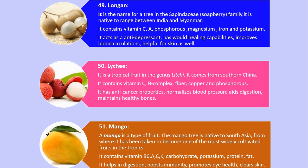Number 51. Mango. A mango is a type of fruit. The mango tree is native to South Asia, from where it has been taken to become one of the most widely cultivated fruits in the tropics. It contains vitamin B6, A, C, K, carbohydrate, potassium, protein and fat. It helps in digestion, boosts immunity, promotes eye health, and clears skin.